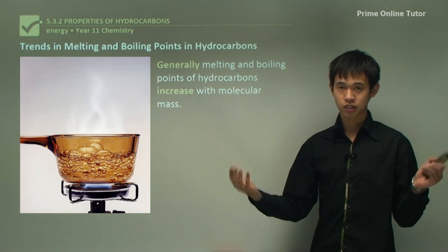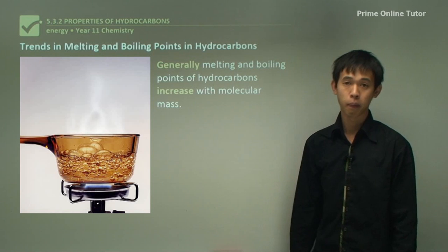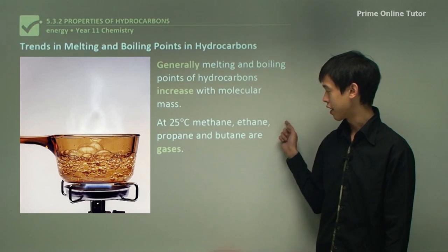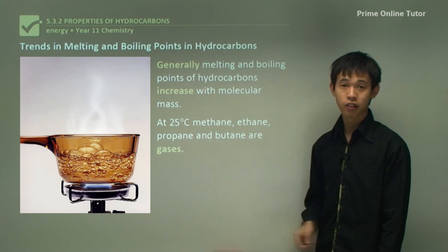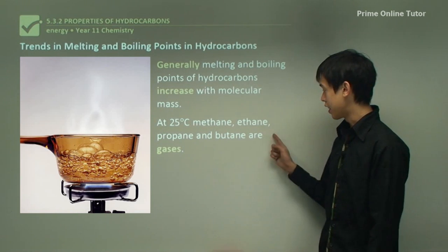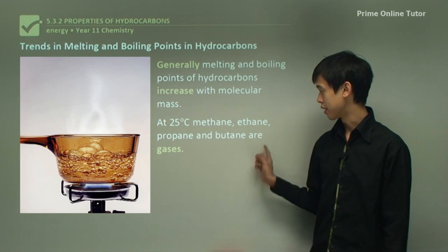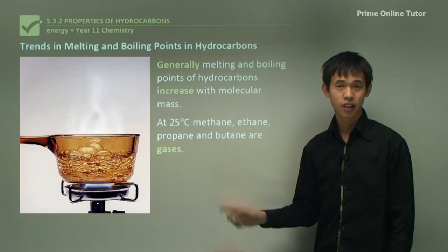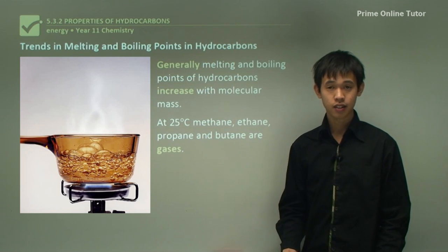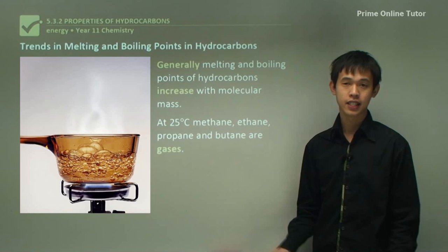The bigger chains which settle at the bottom have much higher boiling points than the ones that sift up to the top. At 25 degrees Celsius, methane, ethane, propane and butane are all gases. Methane is natural gas; ethane is similar and sometimes gets mixed up with natural gas. Propane and butane are the two chemicals you find in gas canisters for your barbecue or hot plate. So they're all gases at room temperature.